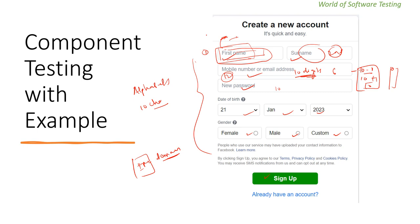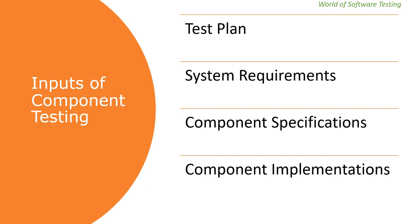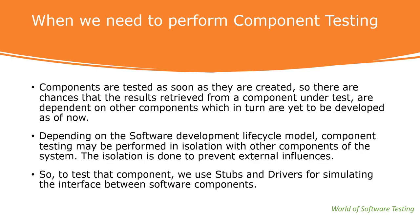Component testing works on a component basis: for every component we apply specific requirements and verify the specific output. The main goal is to validate the input/output performance of the test object. The major inputs for component testing are: the test plan, system requirements, component specifications, and component implementations.